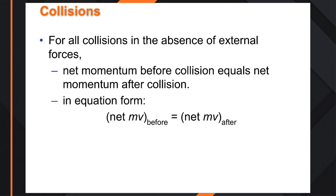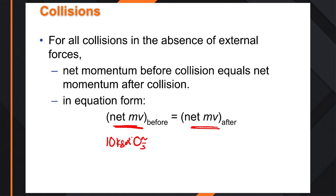For all collisions in the absence of external forces, the net momentum before the collision equals the net momentum after the collision. With the cannon example: we had 10 kilograms times zero meters per second — zero kilogram-meters per second — and that has to equal the momentum afterwards.